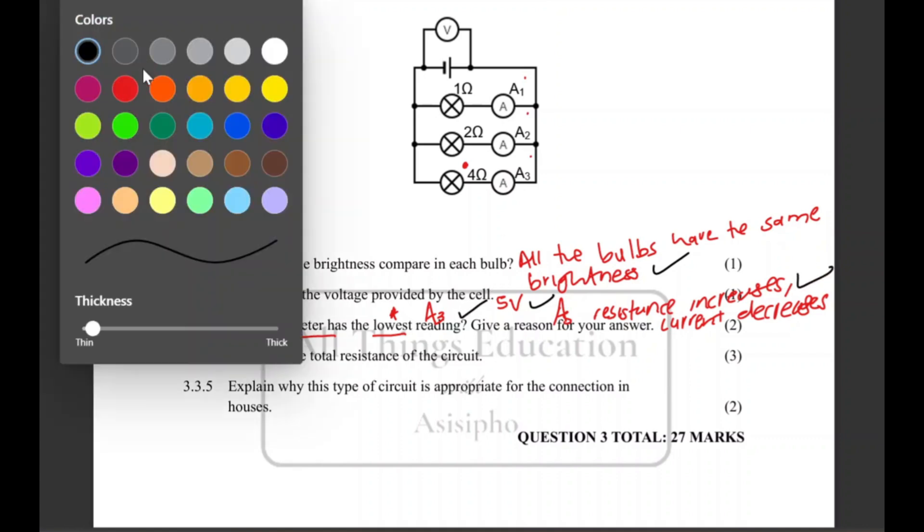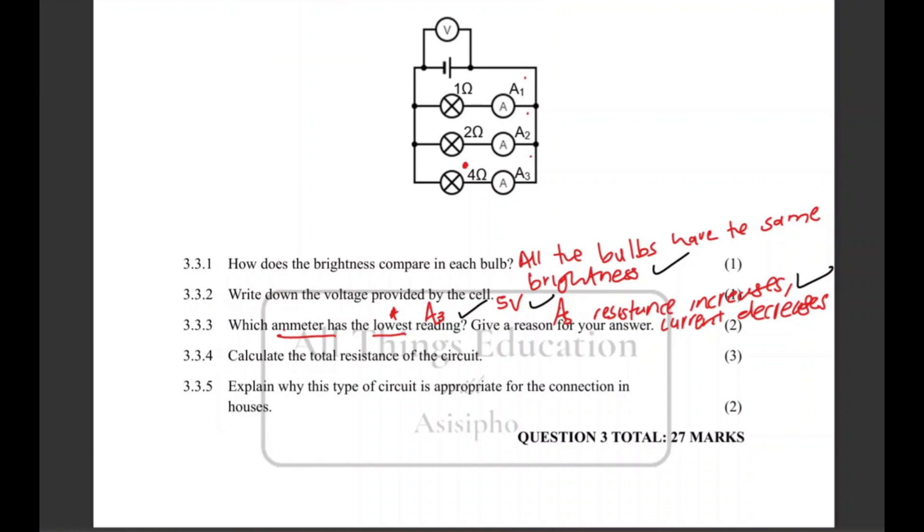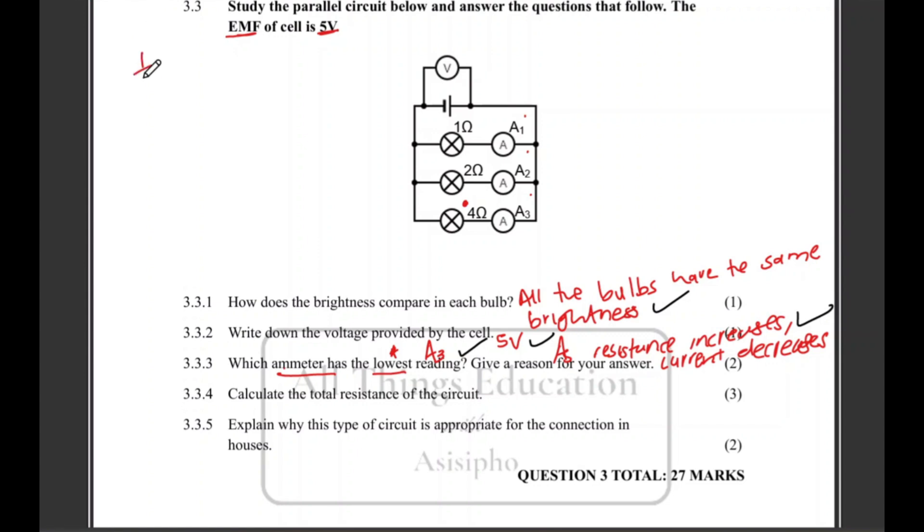Let's move on to the next question. Calculate the total resistance of the circuit for three marks. I'm going to calculate it over here. Remember we calculate the total resistance for a parallel circuit differently compared to a series circuit.